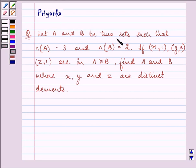Let A and B be two sets such that number of elements in set A are 3 and number of elements in set B are 2. If (x,1), (y,2), and (z,1) are in A cross B, find A and B where x, y, z are distinct elements.